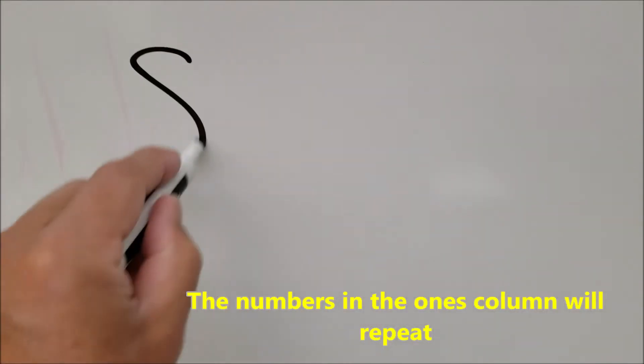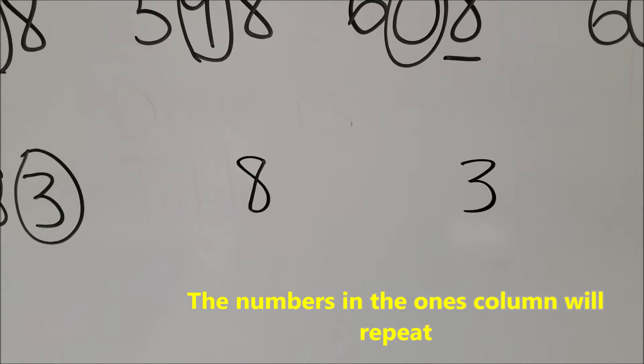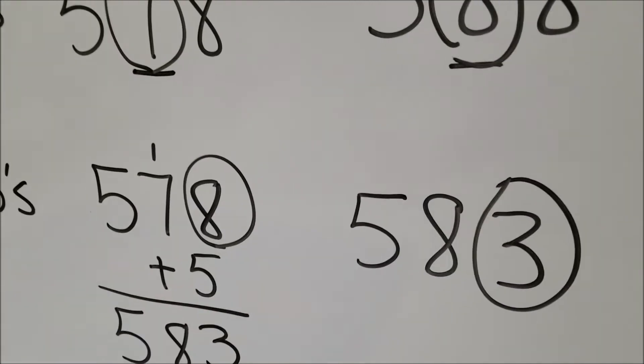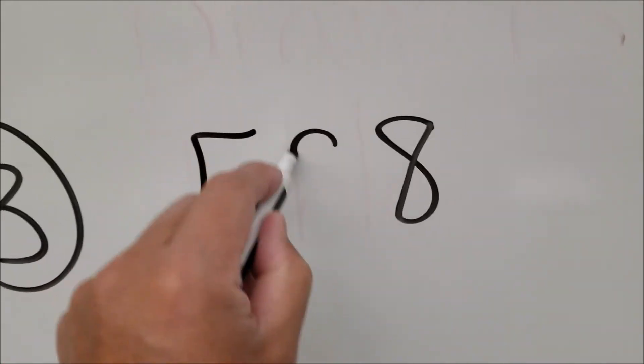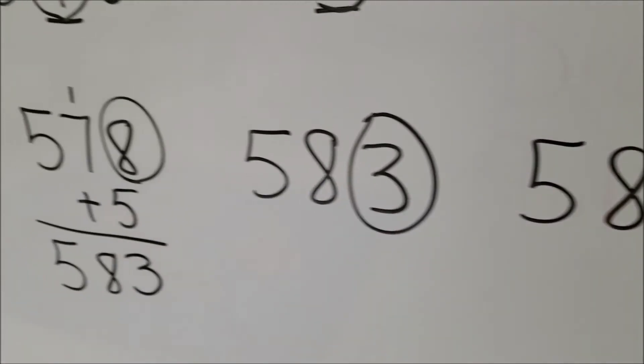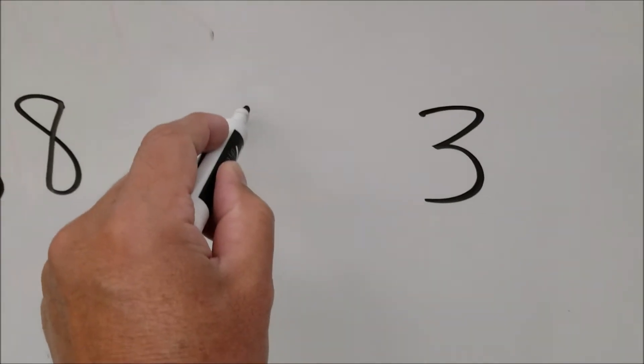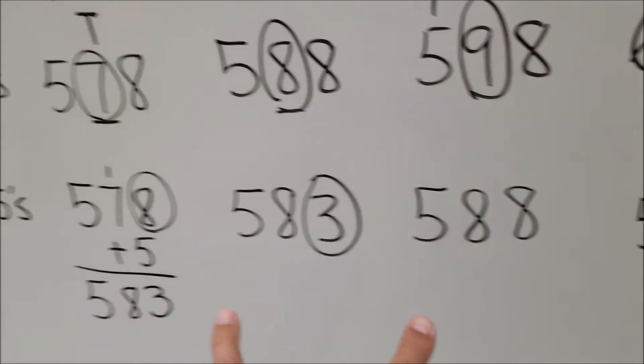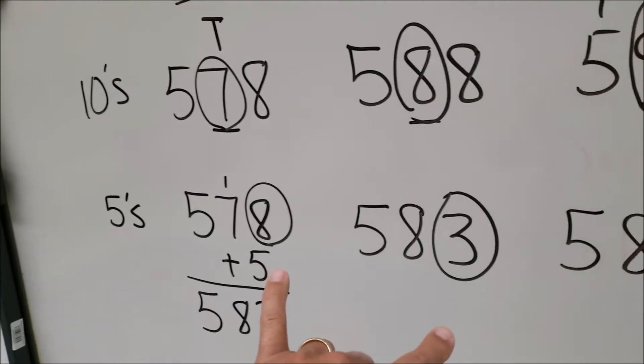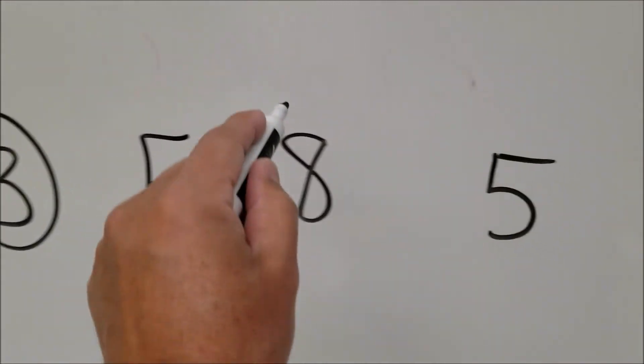So we just know our next number is going to be 8. The next number in the 1s column will be a 3. And we can just say, hey, we're just still going to be in the 80s. So this will be 588. So here's our pattern, 8, 3, 8. Now we just have to tell them, we're always going to have pairs. So there was the 8, 3, 8. Now watch this.